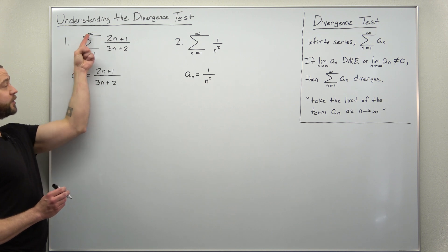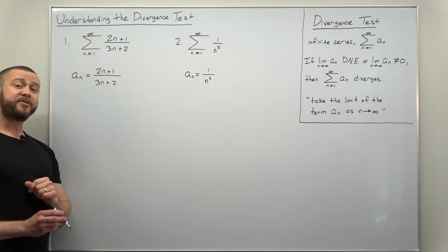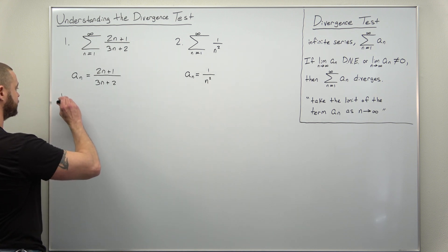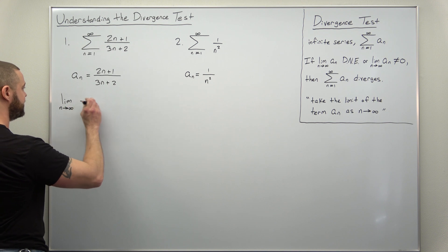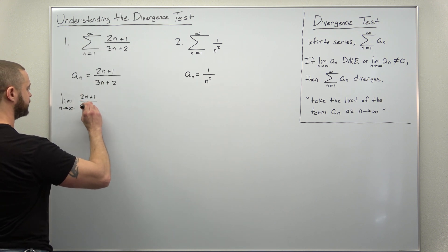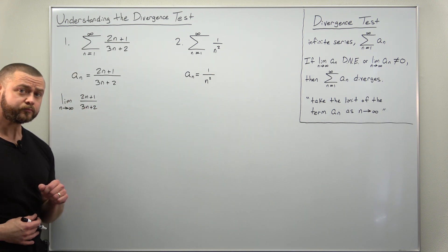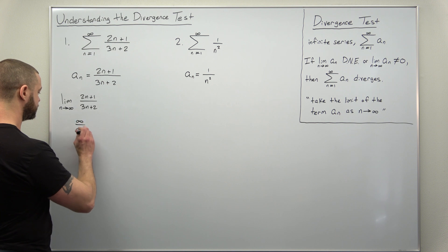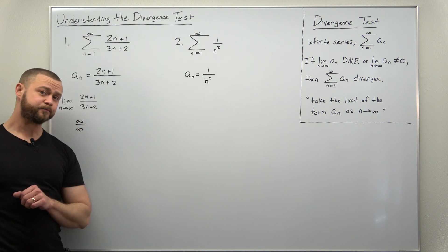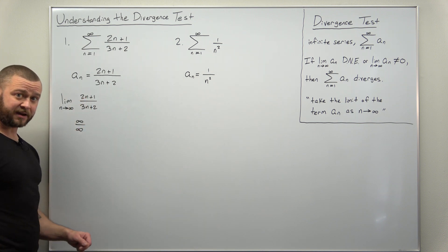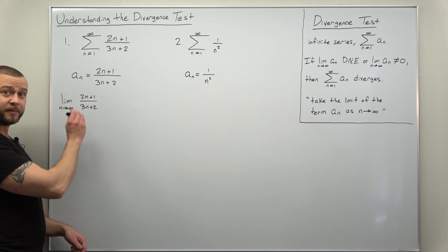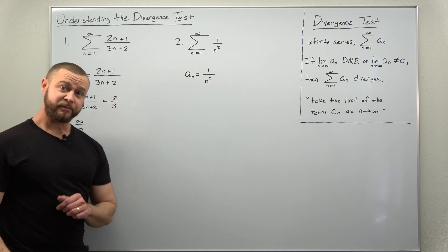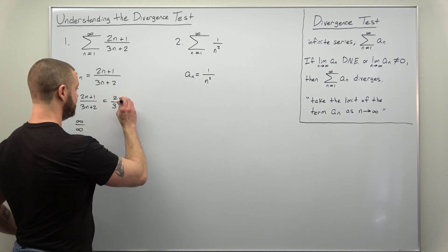The first example is an infinite series from one to infinity where the term is (2n + 1) divided by (3n + 2). We immediately take the limit as n approaches infinity of (2n + 1) / (3n + 2). This gives an indeterminate form of type infinity over infinity, so you can apply L'Hôpital's rule, or notice the powers of n in the numerator and denominator are equal, giving the ratio of leading coefficients. Either way, this limit comes out to two-thirds, which is definitely non-zero.